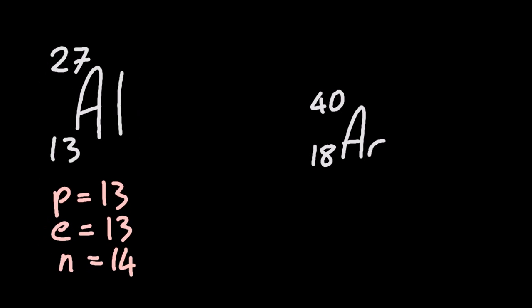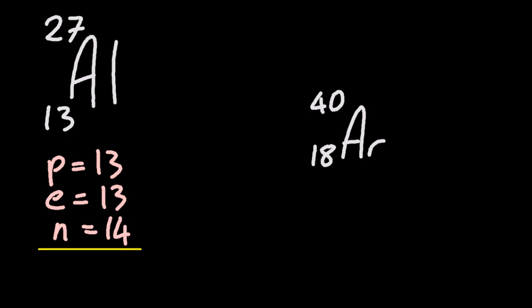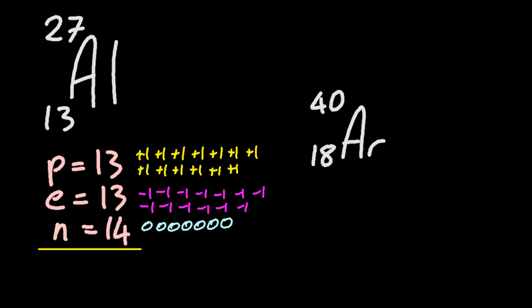So 13 protons for aluminium, 13 electrons, and 14 neutrons. Let's just check those charges: 13 plus ones for the 13 protons, 13 minus ones for the electrons, and 14 zeros. That all cancels out - it's a neutral atom.